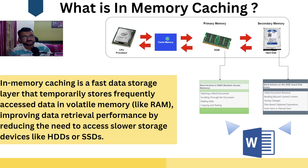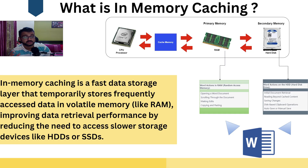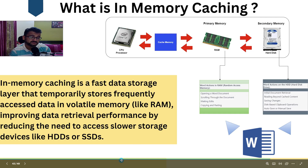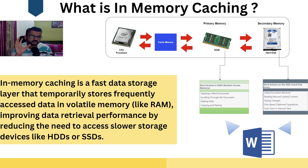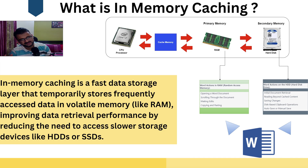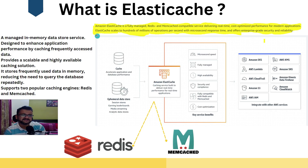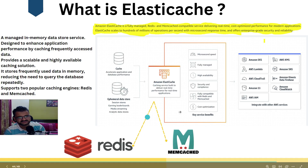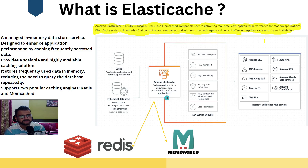In-memory caching is a fast data storage layer that temporarily stores frequently accessed data in volatile memory. This is very important — in-memory databases are volatile; you can't store something forever in them. It's about quickly grabbing something from cache memory. AWS describes ElastiCache as a caching service built to deliver real-time performance, with a cache and an ephemeral — short-lived, transient — data store.